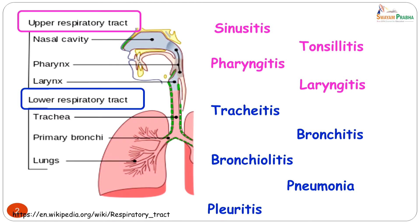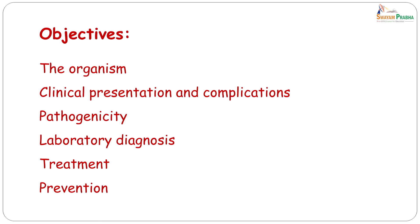Hi, I am Anju Kagar and today I am going to be telling you about Bordetella. Now if you remember, we had spoken about upper respiratory tract infections and lower respiratory tract infections. Today we are going to talk about an organism which is known to cause tracheitis and produce a disease called whooping cough. The objectives of this lecture would be to tell you about the organism, the clinical presentation and complications of the diseases caused by this organism, its pathogenicity, laboratory diagnosis, treatment and preventive measures.